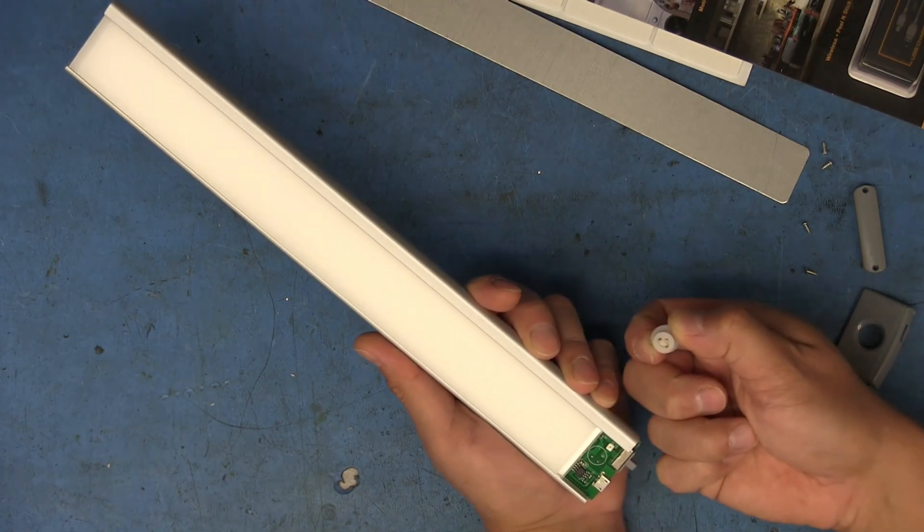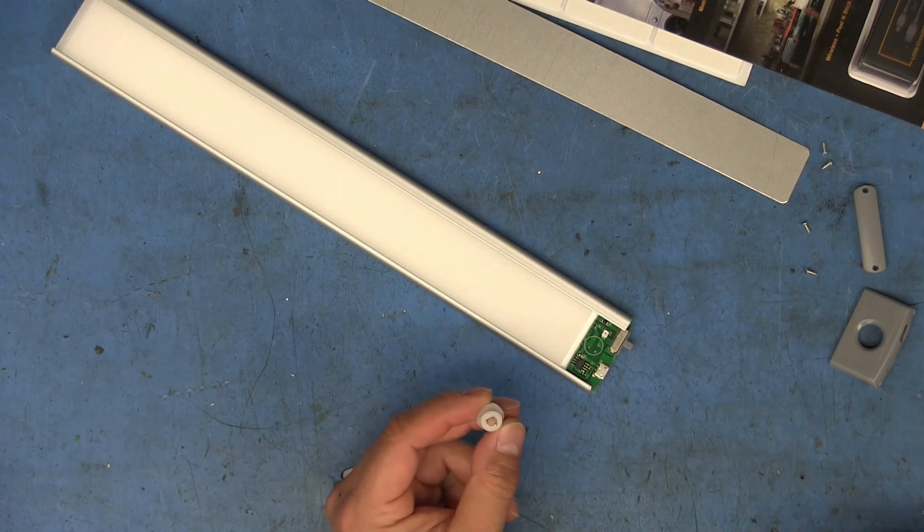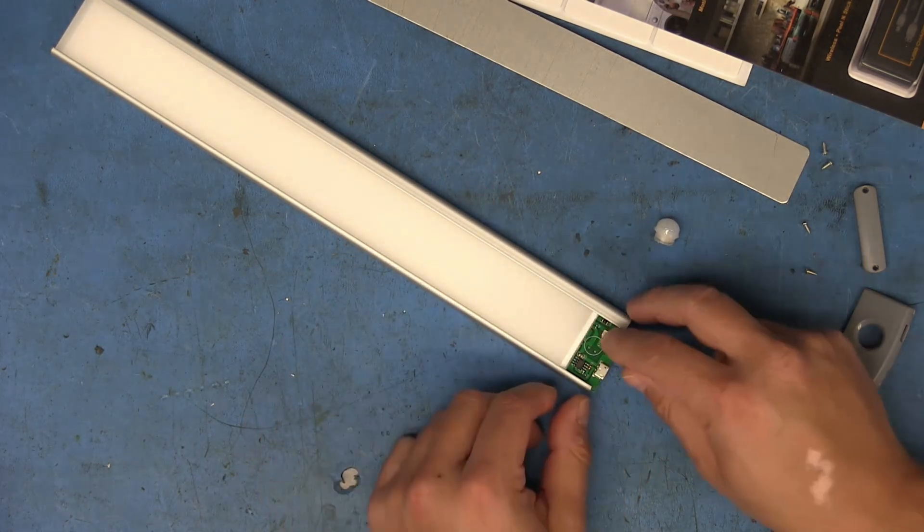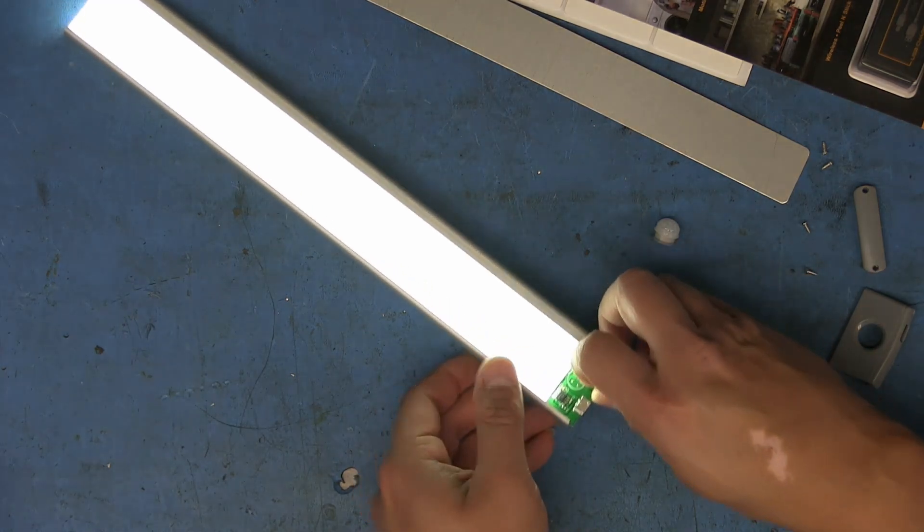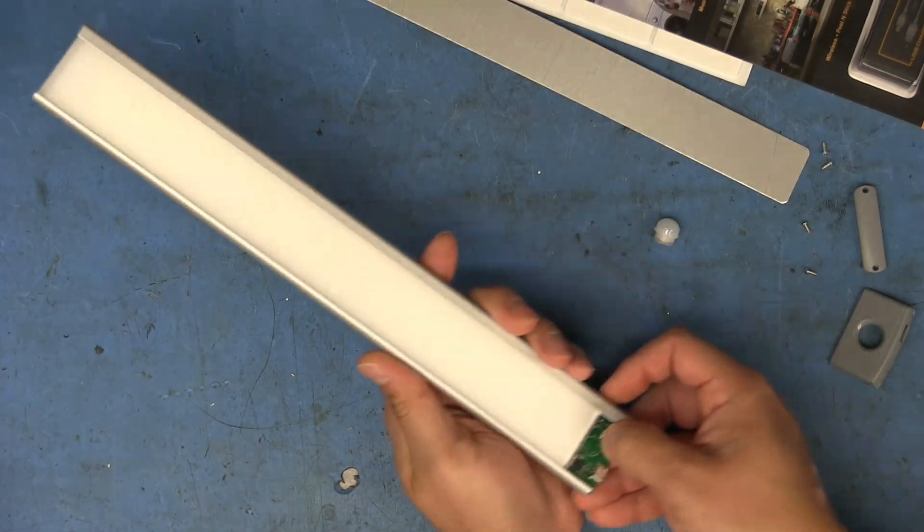Are you kidding me? The motion sensor just pulled off the board. Looks like it wasn't even soldered on that well. I didn't even yank on that very hard. Wow, that's cool. Let's turn this off. I guess we'll see the battery in there as well.